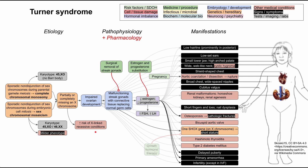A few notes on treating Turner syndrome: these patients will be on estrogen and progesterone substitution probably for most of their life to directly address the hormone deficit. Surgical removal of the streak gonads is also an option. Some manifestations can be treated directly — for instance, to address short stature, patients can be put on growth hormone therapy to help increase their height during puberty. This has been a short review of Turner syndrome.